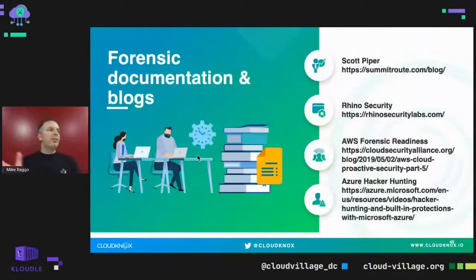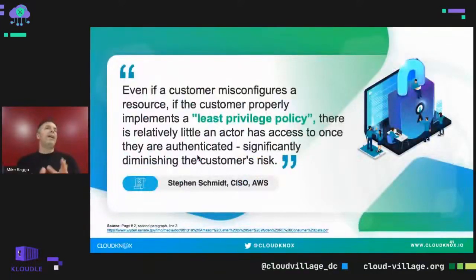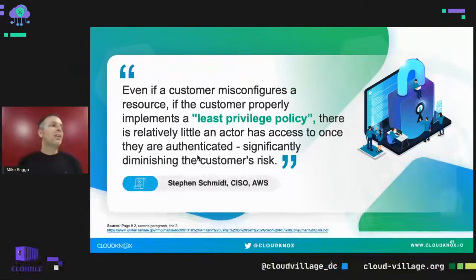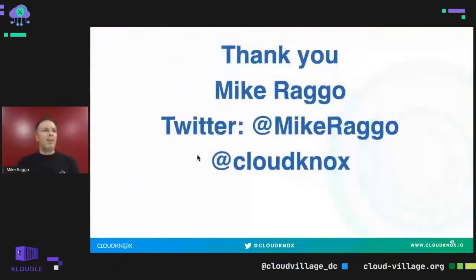Some great additional resources: Scott Piper runs summitroute.com with great content around AWS security. Rhino Security has great reverse engineering blogs. There's the AWS forensic readiness paper mentioned earlier, and Microsoft has the Azure Hacker Hunting series. To close with a quote from Steven Schmidt in a letter to a senator following a prominent breach: 'Even if a customer misconfigures a resource, if the customer properly implements a least-privilege policy, there is relatively little an actor has access to once they are authenticated, significantly diminishing the customer's risk.' That ongoing cycle around least privileges to eliminate excessive permissions and toxic combinations is what this is all about. Thank you.